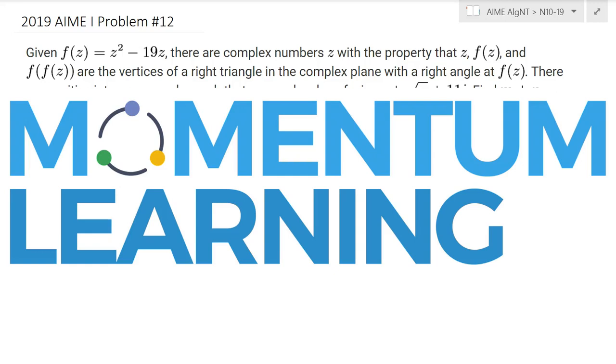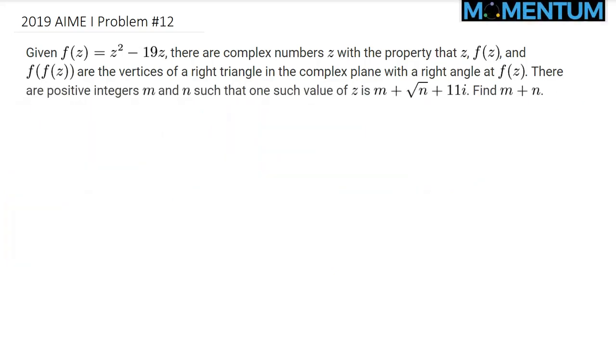This is 2019 AIME 1 problem number 12, and here is a view of this problem. So basically the question is telling you that Z, F of Z, and F of F of Z, these are three complex numbers, and in the coordinate plane, in the complex plane I should say,